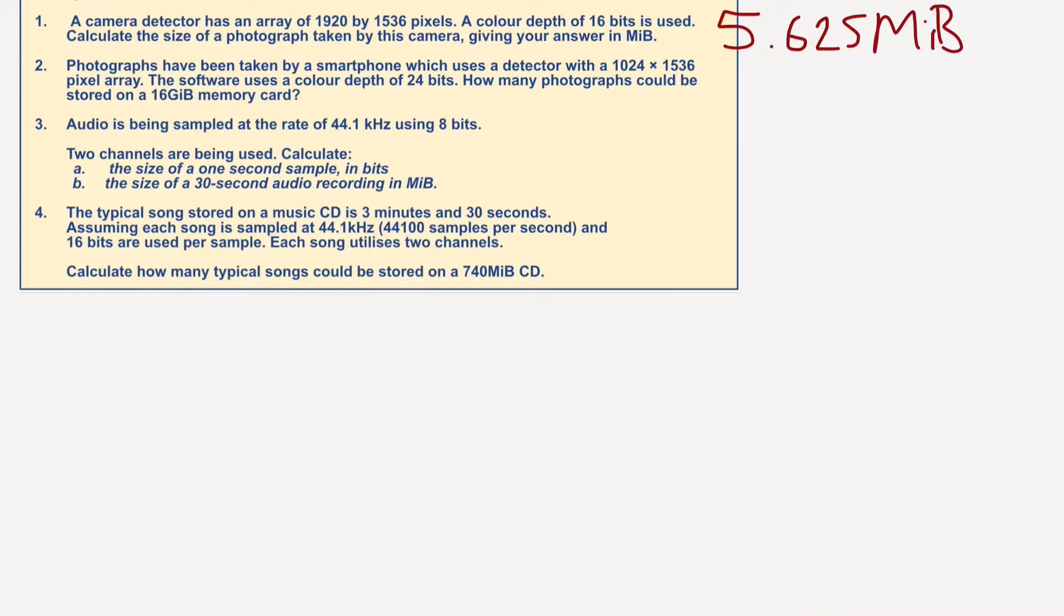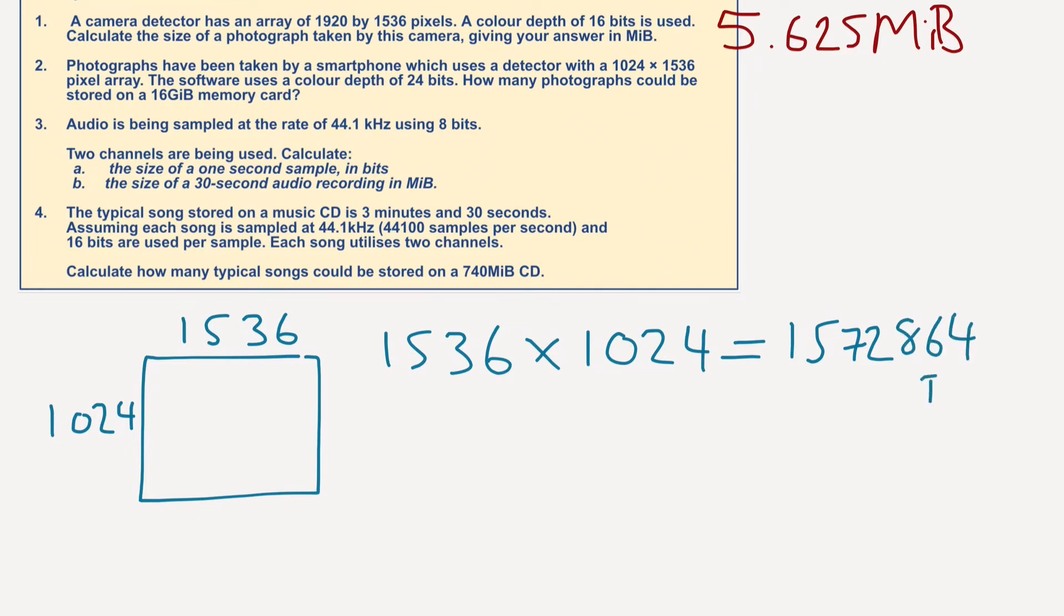Right, the second one. Let's draw this out. And this time it is 1536 multiplied by 1024. And of course, we need to multiply that by 24. 1536 times 1024 equals 1,572,864. And again, these are pixels.